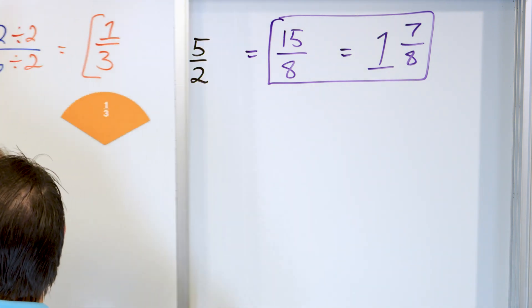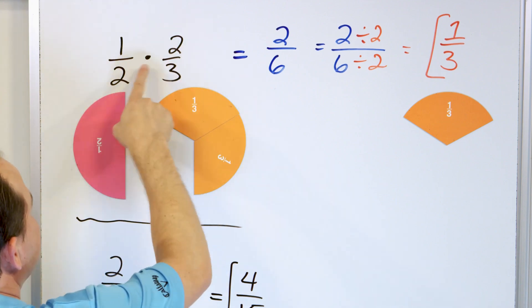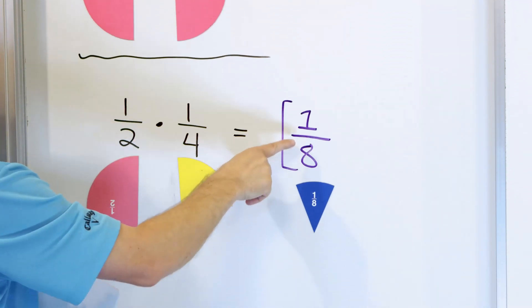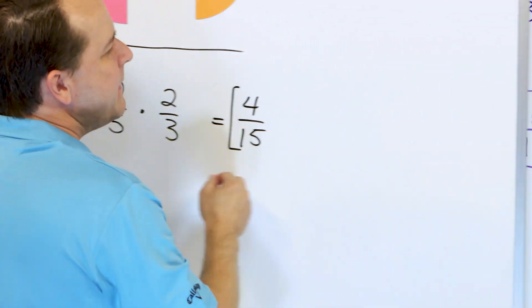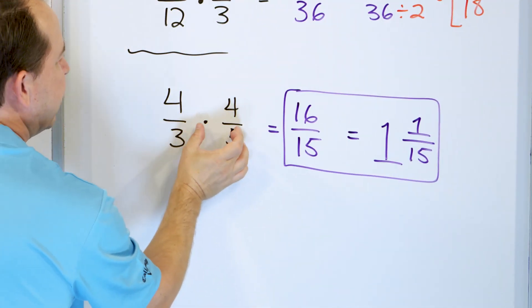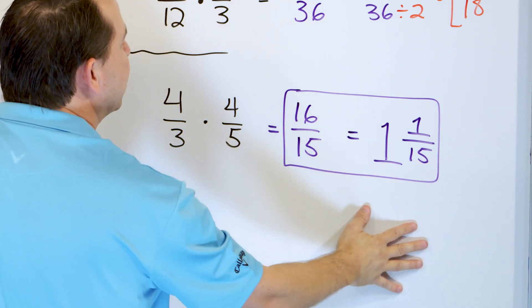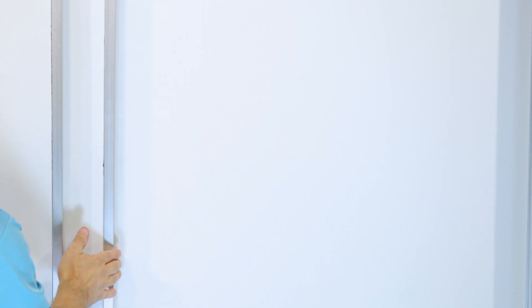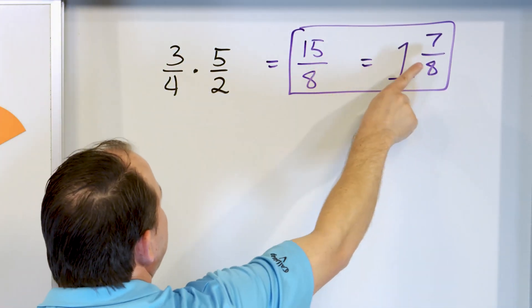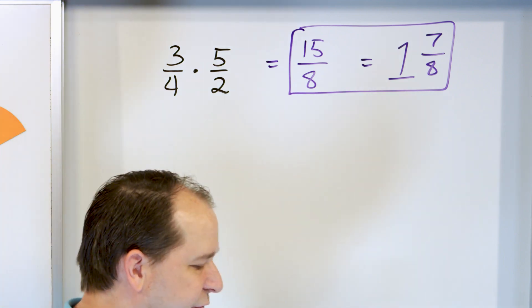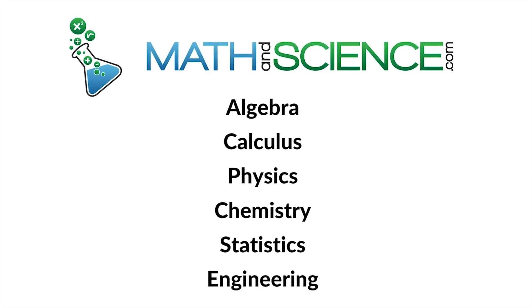For most problems we multiply small fractions together and get small fractional answers. But if you take a fraction larger than one and multiply by another fraction, you can get an answer bigger than one — an improper fraction. So here we've conquered multiplying fractions — incredibly crucial material. Practice all of these yourself, and when you feel comfortable, follow along to part two for more skills and practice with multiplying fractions. Learn anything at mathandscience.com.